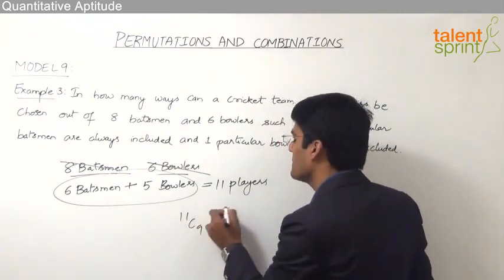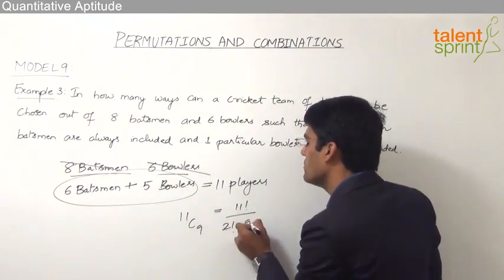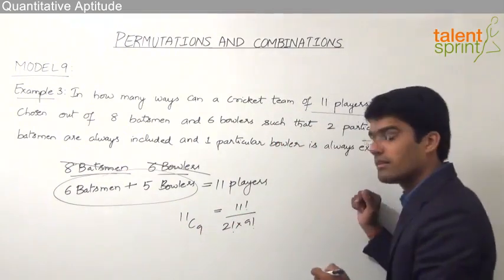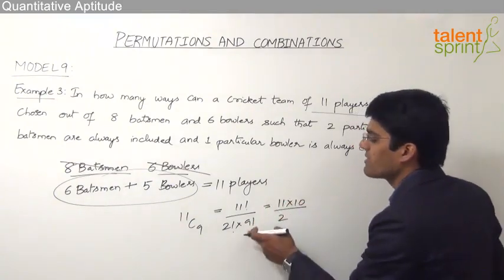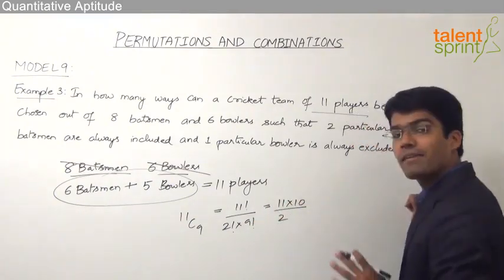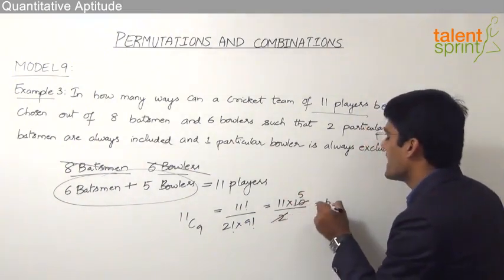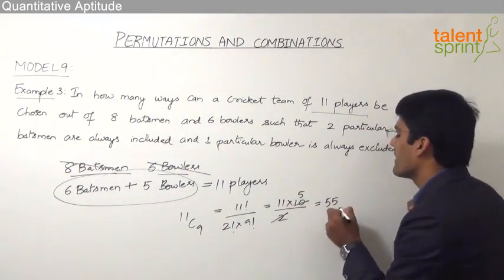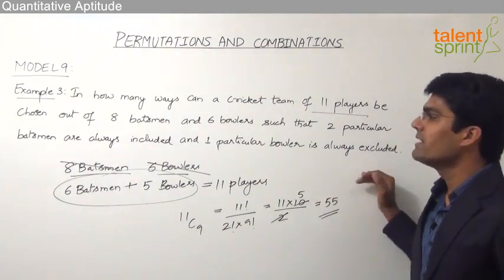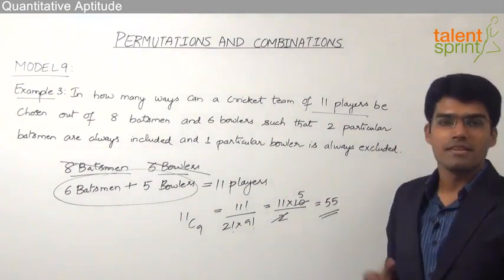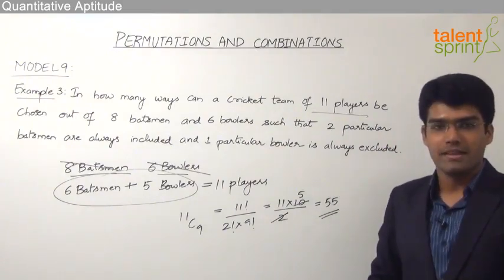11C9 equals 11! divided by (2! × 9!), which simplifies to 11 × 10 divided by 2 — since 9! cancels and 2! equals 2 — giving 55. So there are 55 ways to select a cricket team of 11 players where 2 particular batsmen are always included and 1 particular bowler is always excluded.